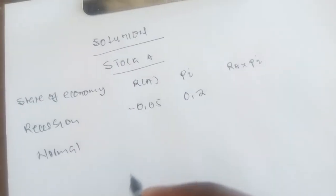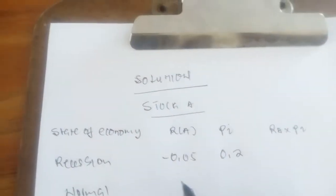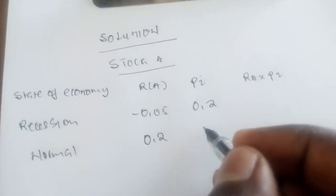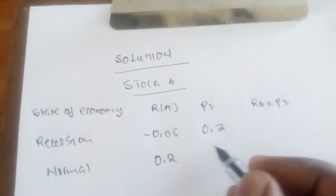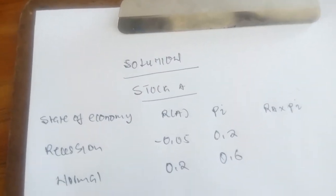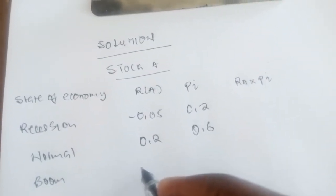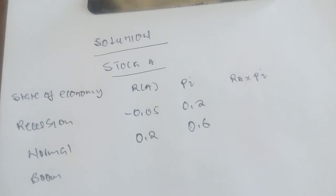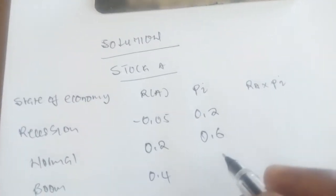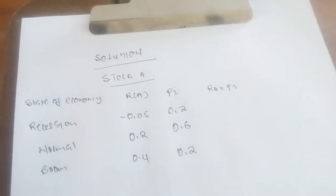Under normal, we had 20% return for stock A. When we convert 20%, we have 0.2, and the probability was 0.6. When we are in boom, the return for stock A was 40%, which is 0.4, and the probability was 0.2.